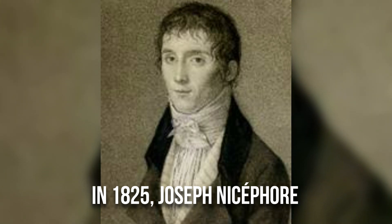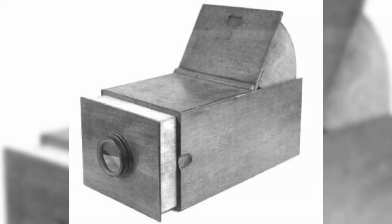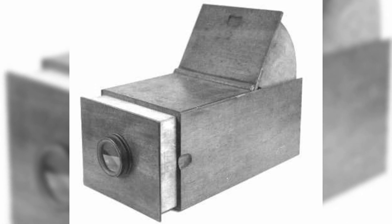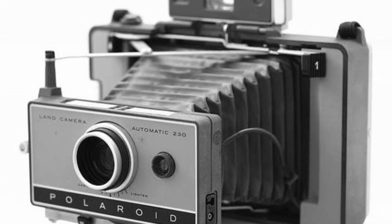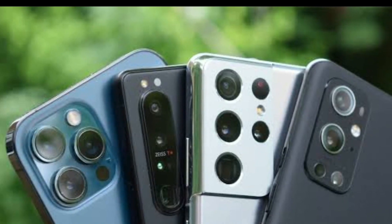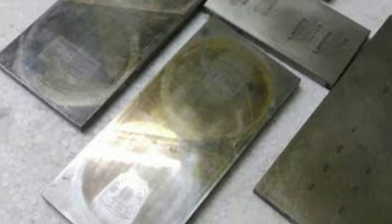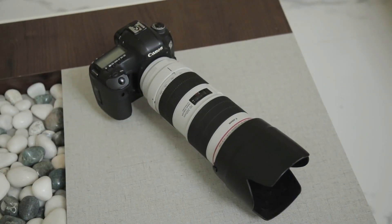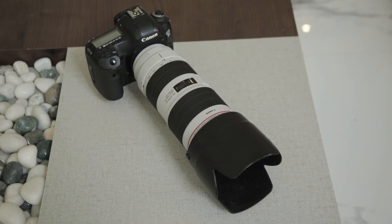Initially, in 1825, Joseph Nisifor Niebbs used a sliding wooden box camera made by Charles and Vincent to take the first permanent camera image. Cameras have evolved from dark boxes to modern digital cameras and camera phones through several generations of photographic technology: silver plate photography, printing plates, dry plates, and film. But have you ever wondered how cameras are made? Watch the video ahead to find out.